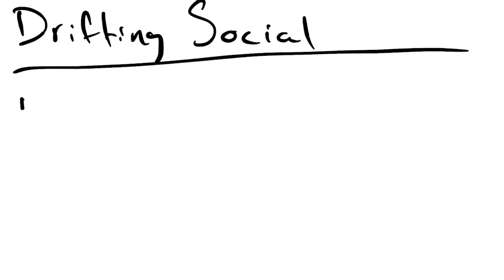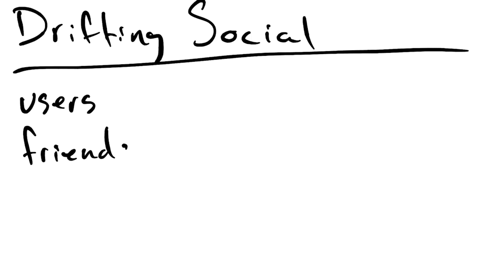In our models, we know that we're going to need a users table, and then we're also going to need some kind of friendship. This friendship will be a link between multiple users so that they can follow each other and see each other's posts.